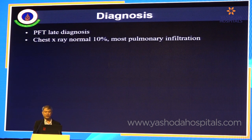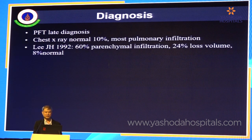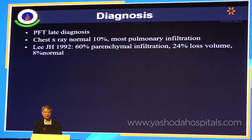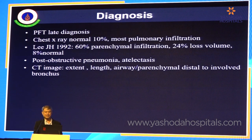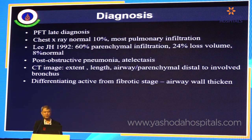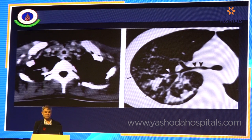The chest X-ray may be normal in 10% of cases. Mostly patients show pulmonary infiltration — 60% show pulmonary infiltration, with 24% showing loss of lung volume, and 8% show a normal chest X-ray. Patients may present with post-obstructive pneumonia or atelectasis. CT scans can show the location and extent of lesions, and can differentiate active from the fibrotic stage by assessing airway wall swelling, which suggests active disease.